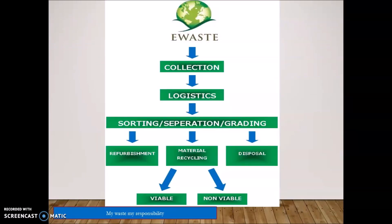Here is the chain or cycle of E-Waste collection from different sources: collection, logistics, sorting, separation or grinding, and refurbishment, material recycling, or disposal. Both visible and invisible forms of E-Waste are being collected.